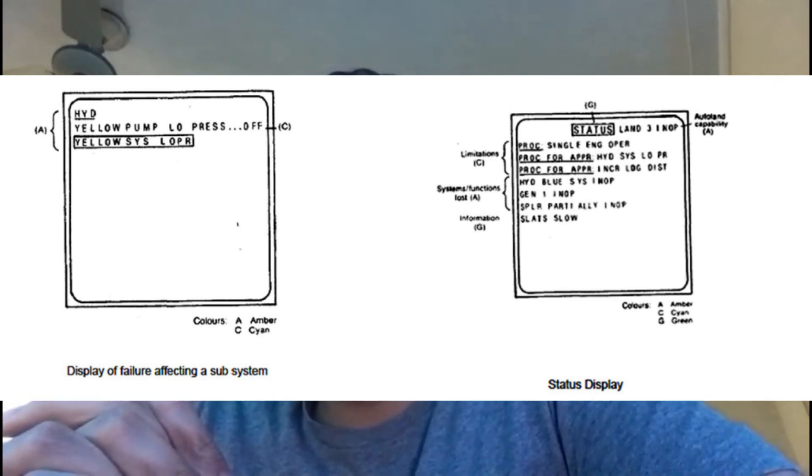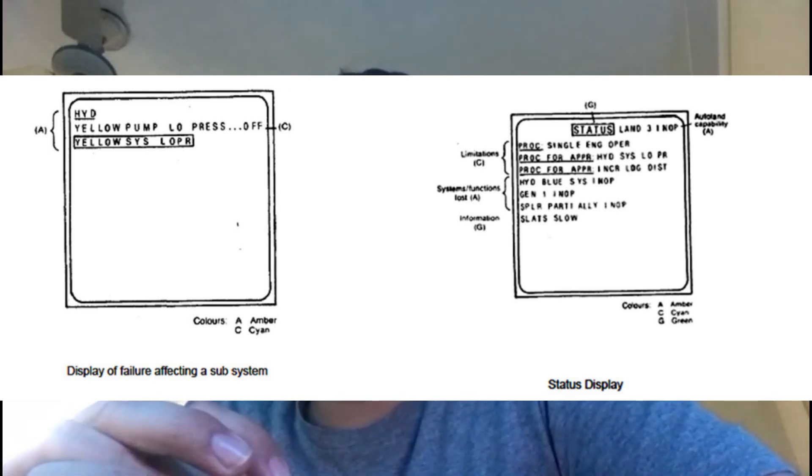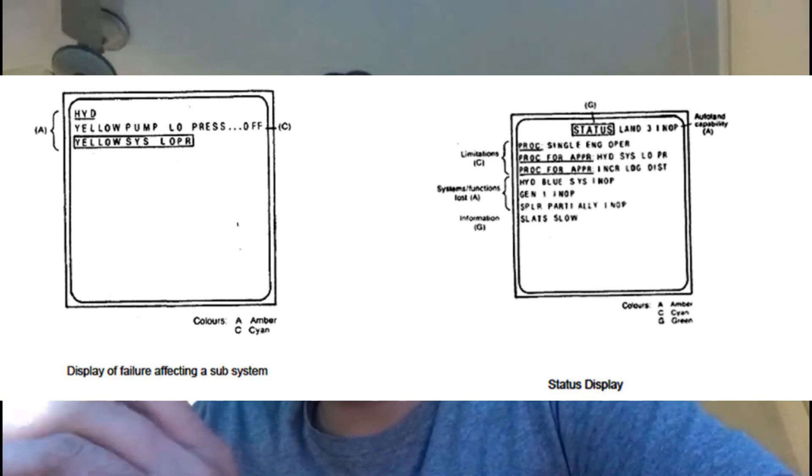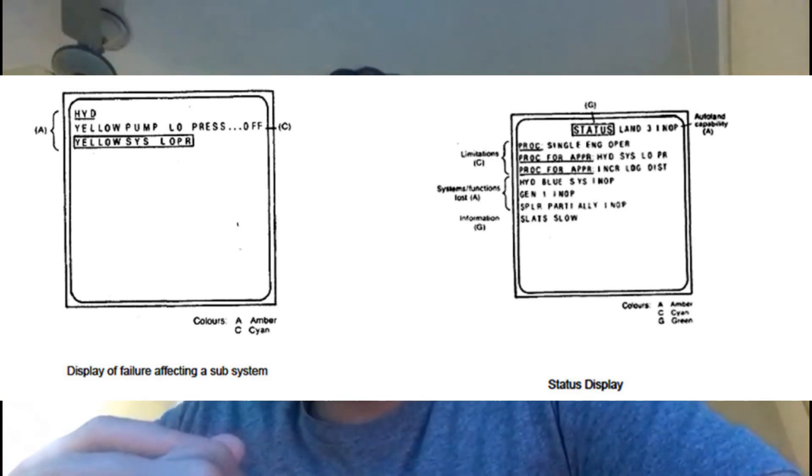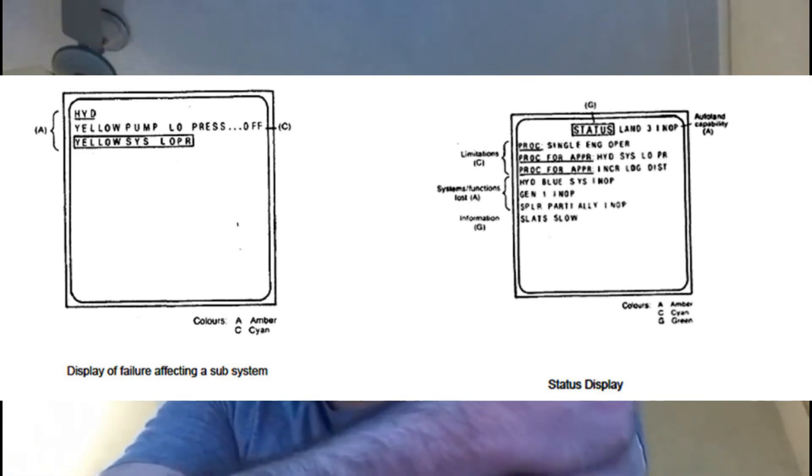Manual mode also permits the selection of status messages, provided no warnings have been triggered for display. These selections are made by means of illuminated pushbutton switches on the ECAM control panel. In normal operation, the automatic flight phase related mode is used. In this case, the displays are appropriate to the current phase of aircraft operation.